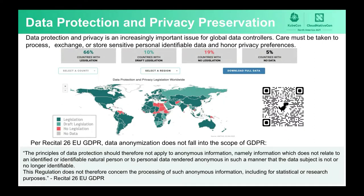Care must be taken to process, exchange, or store sensitive personal identifiable information and honor privacy preferences. Here we have a diagram from the United Nations dated year 2020. About 66% of the countries in the world have data protection laws. Just a couple of years before that, the number was about 50%. So we anticipate more and more countries will have data protection laws in the future.